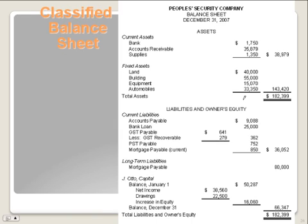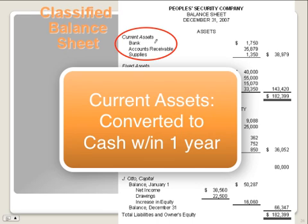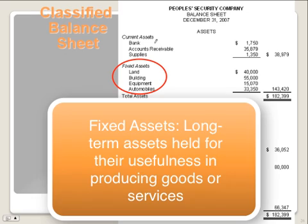The classified balance sheet is very similar to the most recent balance sheet, however now you will notice there are different classifications. The header — who, what, when — stays the same. We now have something called current assets, which are assets that will be converted into cash within the first year or within this current year.